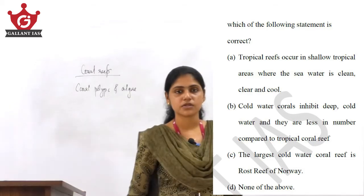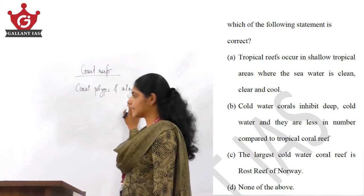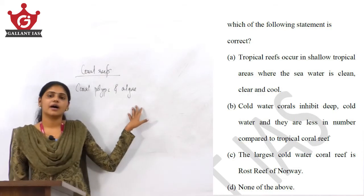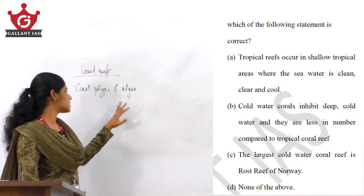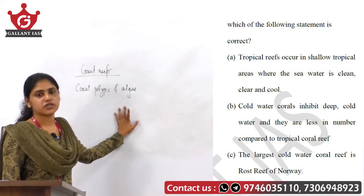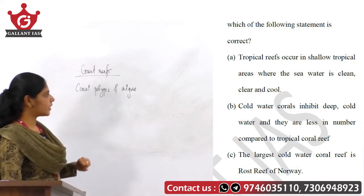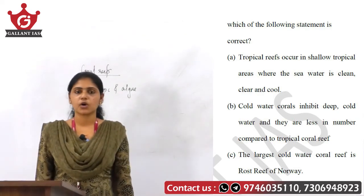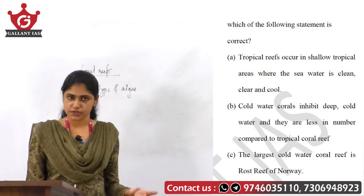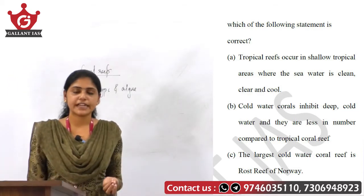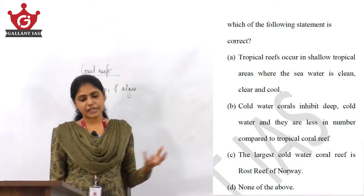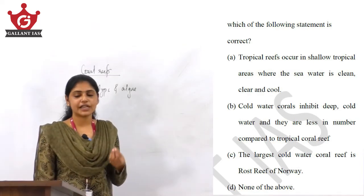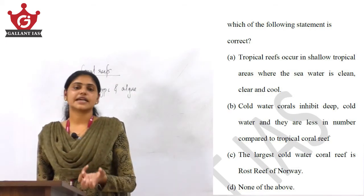Coral reefs are a symbiotic association of coral polyps and algae. The coral polyps form the animal part and the algae — zooxanthellae — form the algal part. Coral reefs can be classified into tropical coral reefs and cold water corals. Tropical coral reefs are mainly found in tropical and subtropical waters — corals grow best in warm, shallow, clear, and sunny water. They cannot tolerate cooler environments.